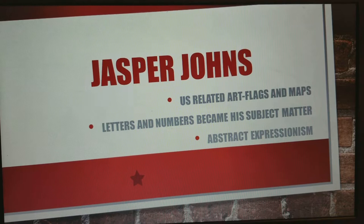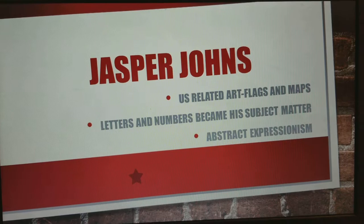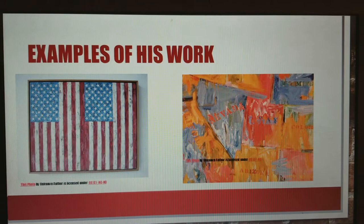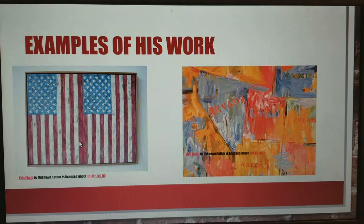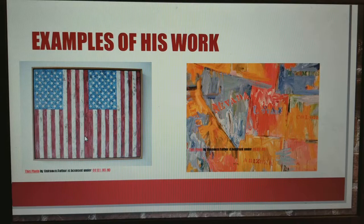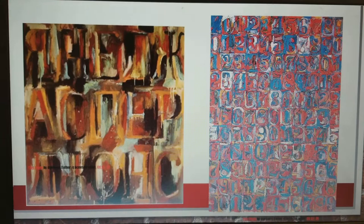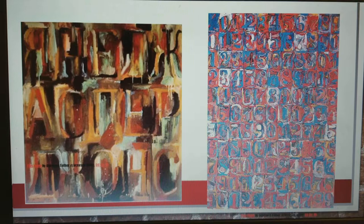Jasper Johns also does letters and numbers, which became his subject matter later on, making him almost an abstract artist. Here is an image of one of his American flag pieces. On the right is a map of the United States, zoomed in — I can see Nevada, Utah, Colorado, Arizona. There's lots of texture, and the paint is even dripping down in some areas. On another side, we have the alphabet in art and numbers in art.